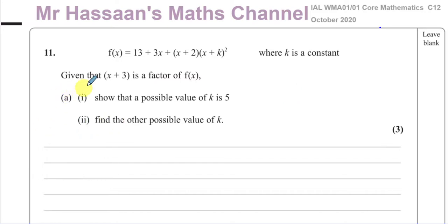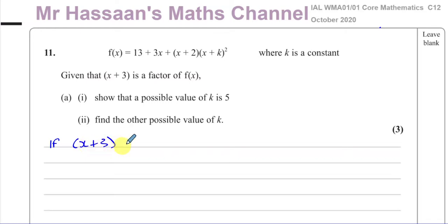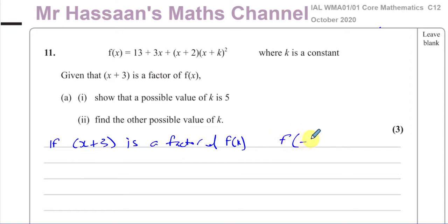Here they're giving you a function f of x. It says given that x plus 3 is a factor of f of x, show that a possible value of k is 5, and find the other possible value of k, where k is a constant. If x plus 3 is a factor of f of x, then whatever makes this bracket zero — which is when x equals negative 3 — means if you substitute minus 3 into the function f, you're going to get 0. Whatever makes this bracket 0 will make this whole function 0 when you substitute it into that function.